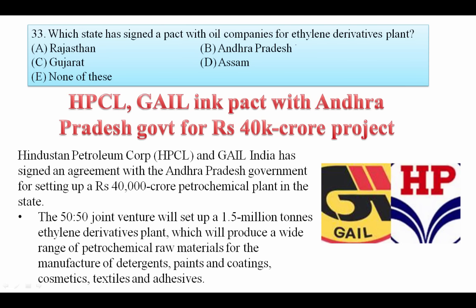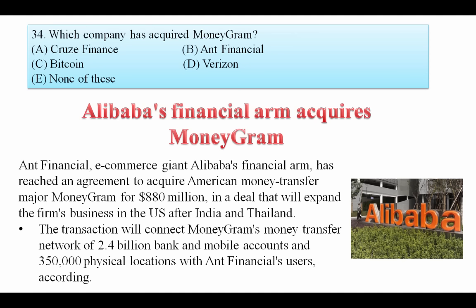Which state has signed a pact with oil companies for an ethylene derivatives plant? HPCL — Hindustan Petroleum Corporation — and Gela signed an MOU with the Andhra Pradesh government to set up a 40,000 crore petrochemical plant in the state. Your answer is B — Andhra Pradesh.